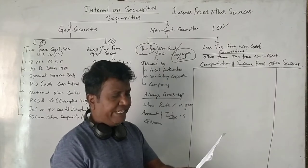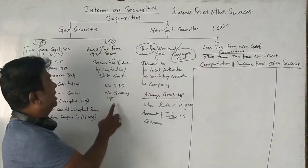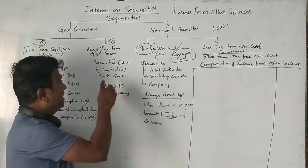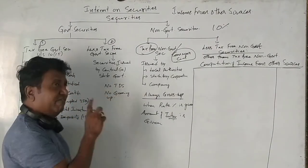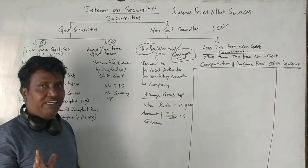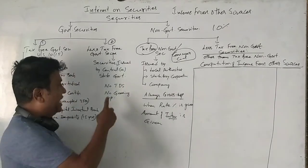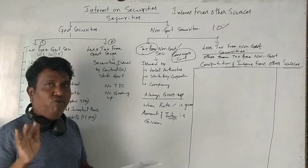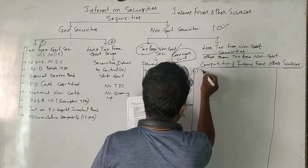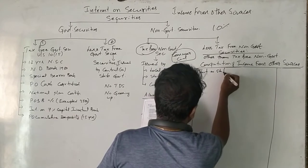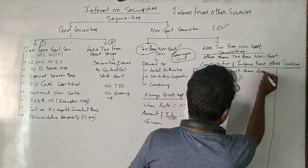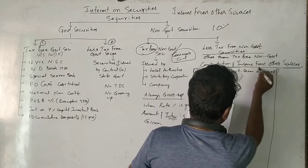First point is rupees 2 lakhs, 8% state government securities. These are tax-free government securities issued by the state government. When you invest money in state government securities, the state government pays you interest every year. On such interest, no tax will be deducted — they give you the gross amount, the full interest earned. So no need of grossing up. Interest on state government securities: on 2 lakhs at 8% = 16,000.